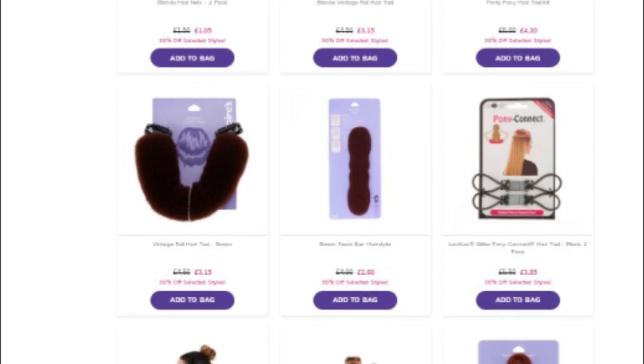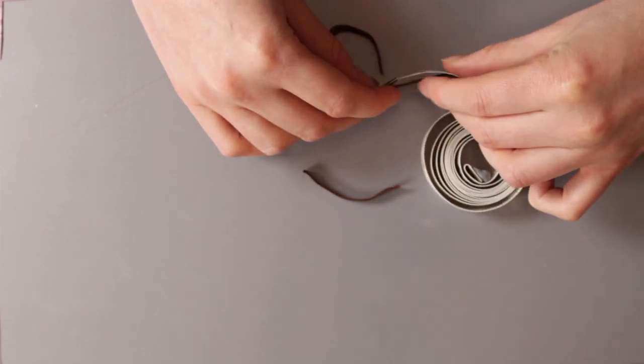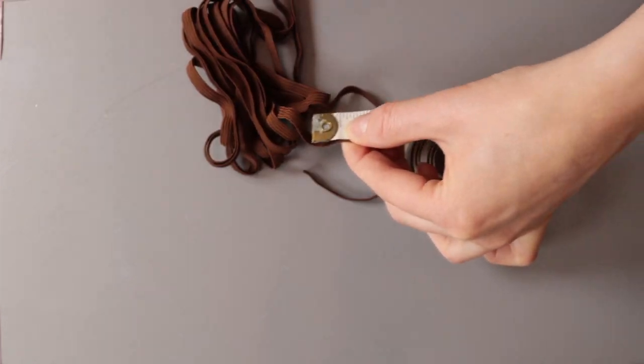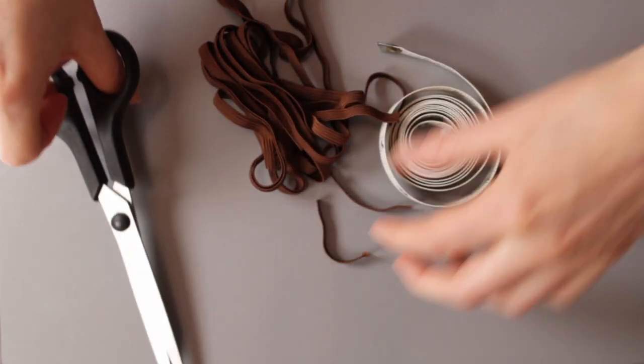What you want is the foam bun hair styler which doesn't have the grips on yet because you're going to add them. First you need to cut a 2 inch piece of elastic twice, one for each side.